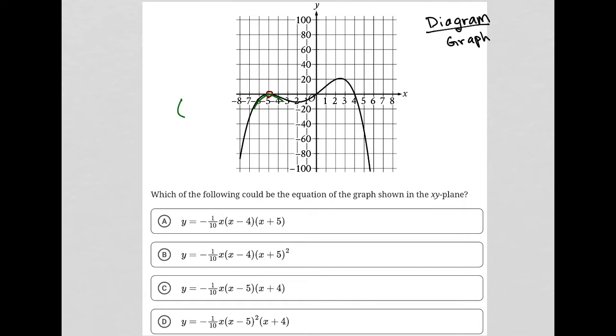So this, in fact, would be x plus 5 squared is how that would be represented. And then we also have an x-intercept here at the origin. And then this x-intercept goes through at positive 4.